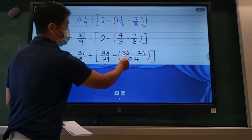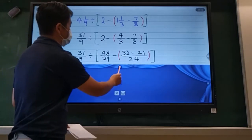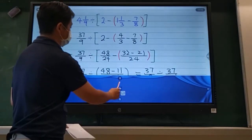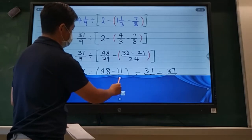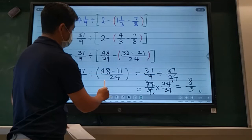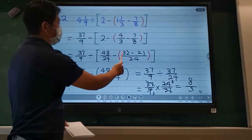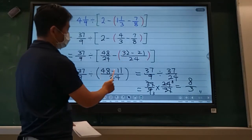All right, so then we got to do the numerator. Subtract the numerator. We should get 32 minus 21 should be 11.